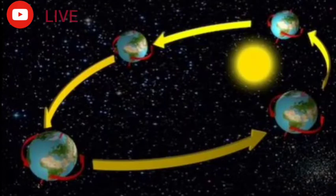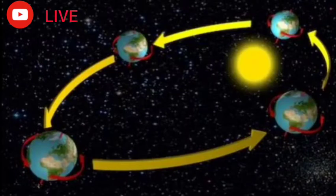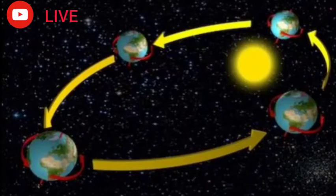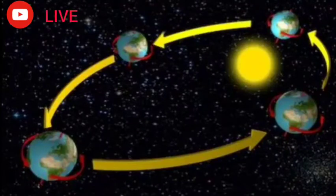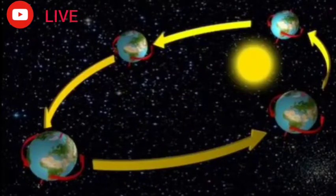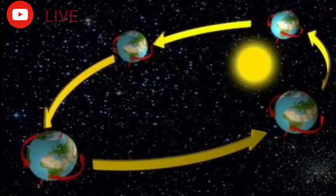Whereas in September, as the earth travels further around the sun, the sun shines directly over the equator. In December, it shines over the Tropic of Capricorn in the southern hemisphere. When the earth comes to this December position, the southern part will directly face and receive the rays from the sun — that is why the southern part gets temperatures during December month.